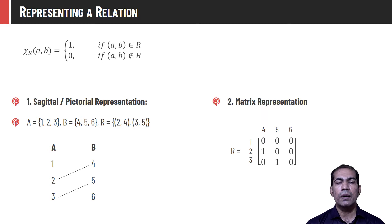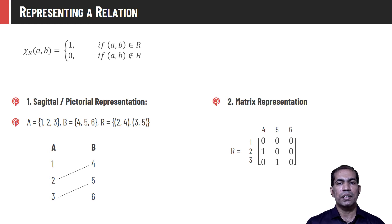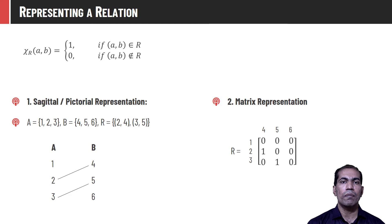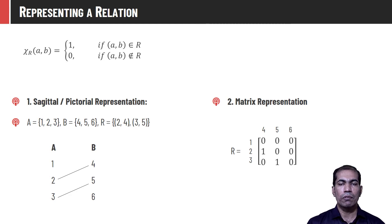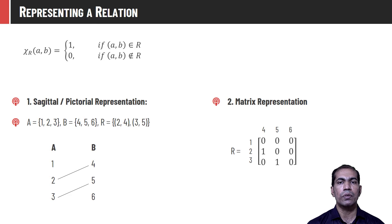Another very convenient and powerful representation is matrix representation. In this matrix, the rows indicate elements from set A and columns represent elements from set B. As (2,4) and (3,5) are in R, we set row 2, column 4 to value 1, and row 3, column 5 to value 1. All other elements are set to membership value 0.